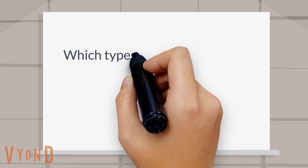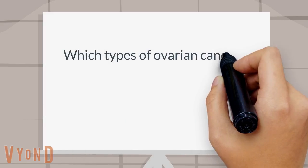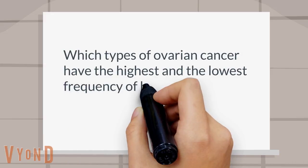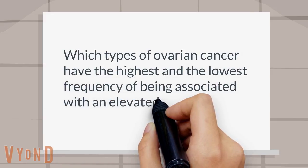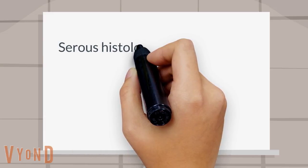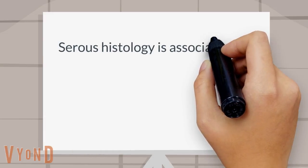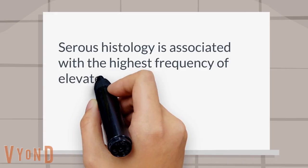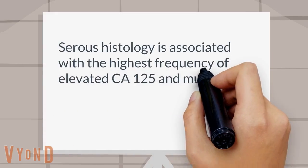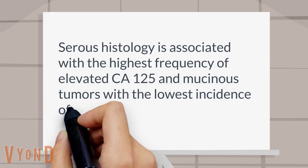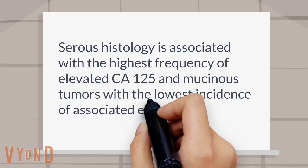Which types of ovarian cancer have the highest and the lowest frequency of being associated with an elevated CA125? Serous histology is associated with the highest frequency of elevated CA125, and mucinous tumors have the lowest incidence of associated elevated CA125.